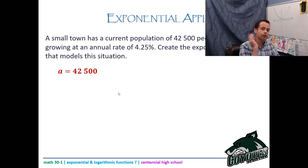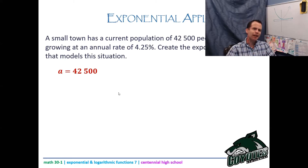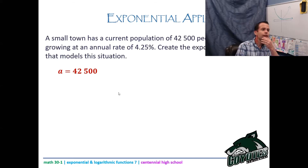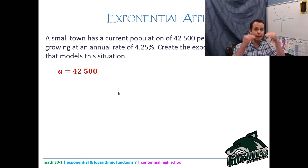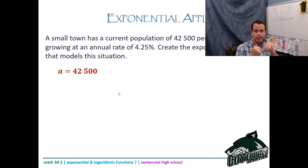Think of it this way: if I said a student changed by 100%, mathematically 100% as a number is 1. Multiplying by 1 means no change at all. For growth, the change must be greater than 100%; for decay, it must be less than 100% — just like how c must be greater than 1 for growth and between 0 and 1 for decay.